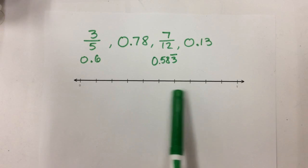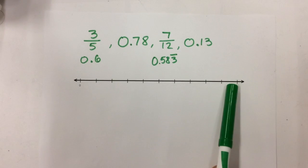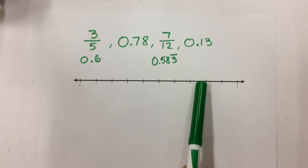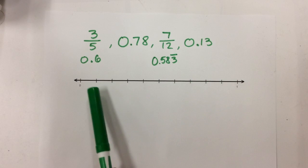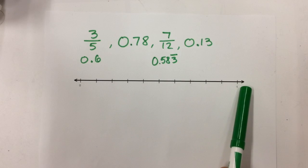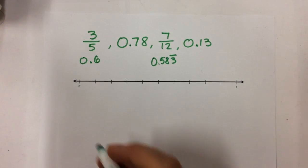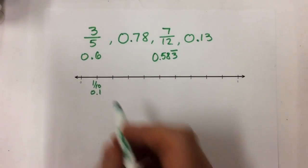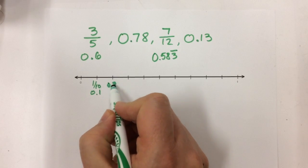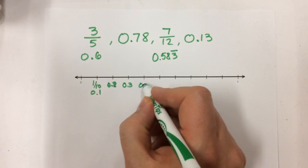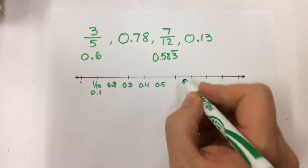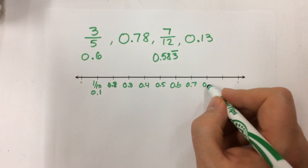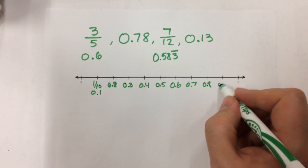If this starts at 0 and ends at 1, I count 1, 2, 3, 4, 5, 6, 7, 8, 9, 10 dashes — so this is broken into 10 individual pieces. Each of these would be worth 1 tenth in decimals. So if this is 1 tenth, then this is 2 tenths, this is 3 tenths, and so on. It's really important that you label your number line, because if you're not labeling it, you're not going to know where your decimals and fractions go.